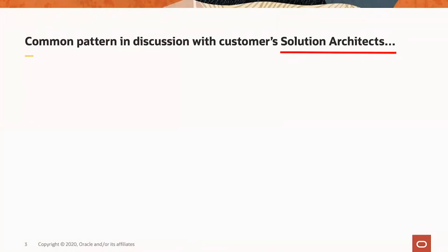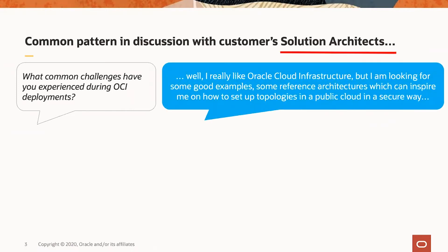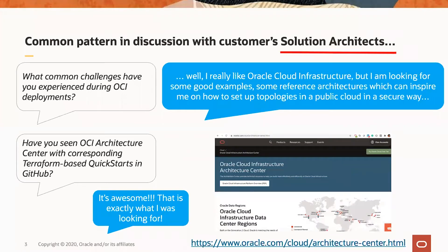First of all, I would like to talk about common patterns in discussions with our customers, especially with solution architects. We used to ask about common challenges which customers experience during OCI deployments. We used to hear something like: 'I really like OCI cloud infrastructure, but I'm looking for some good examples, some reference architectures, which can inspire me on how to set up topologies in a public cloud in a secure way.' We would answer: 'Have you seen OCI Architecture Center and the corresponding Terraform-based quick starts in GitHub?' Customers were really interested and told us it was awesome — exactly what they were looking for.